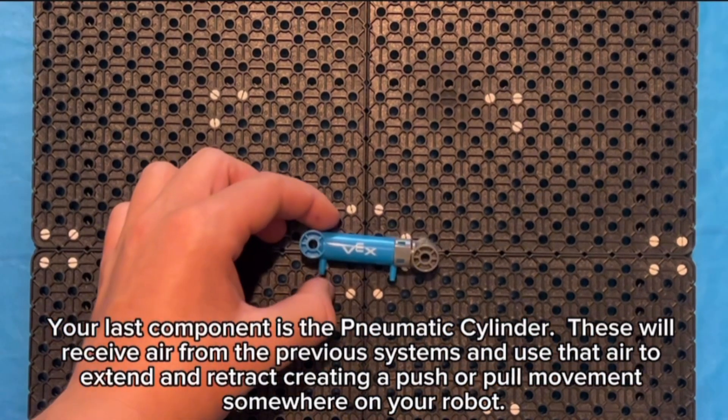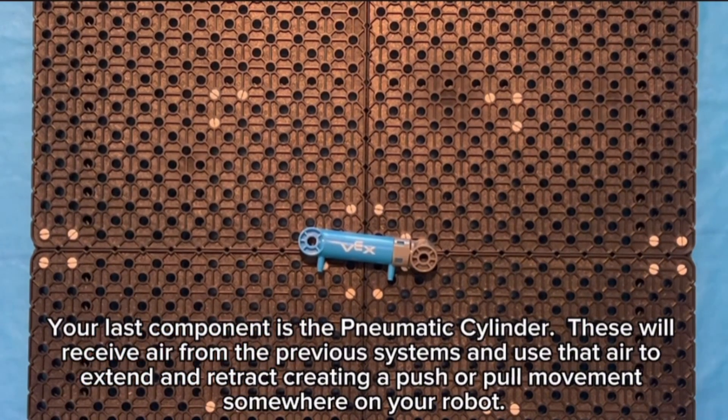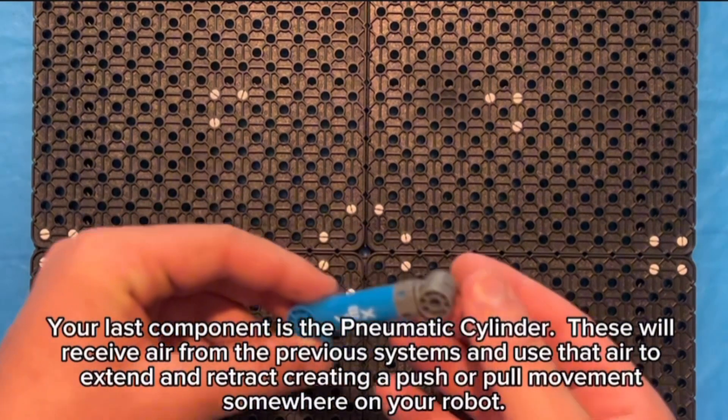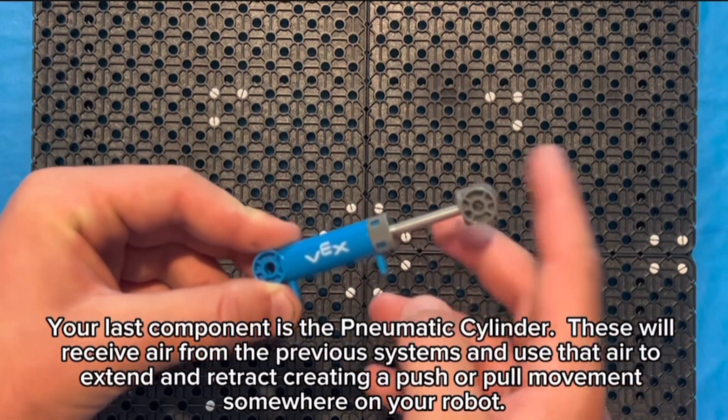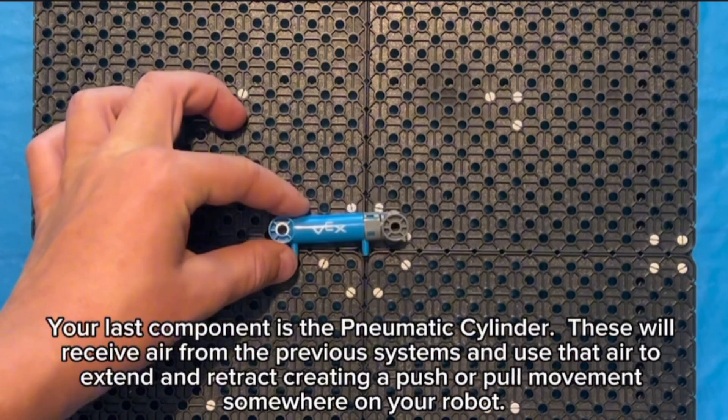Your last component is the pneumatic cylinder. These will receive air from the previous systems and use that air to extend and retract, creating a push or pull movement somewhere on your robot.